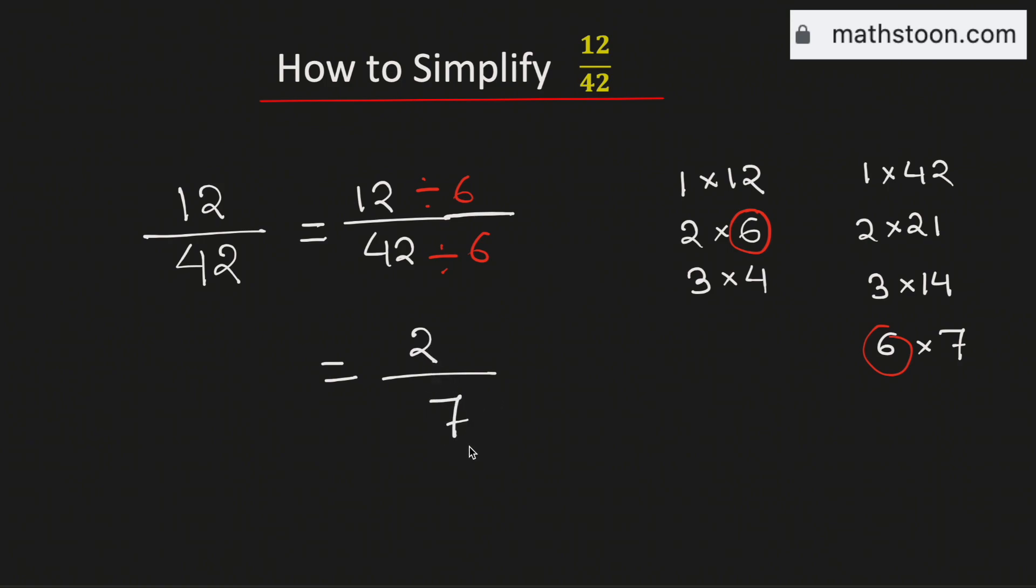As both 2 and 7 are prime numbers, this fraction is already in simplified form. Therefore, 2 by 7 is the simplified reduced form of the fraction 12 over 42. And this is our final answer.